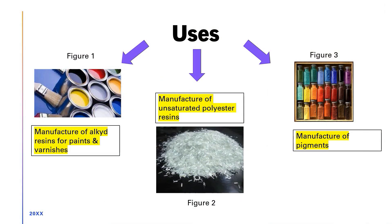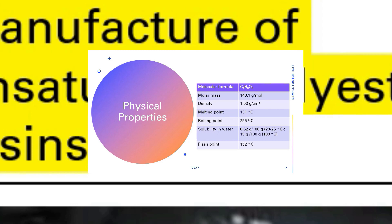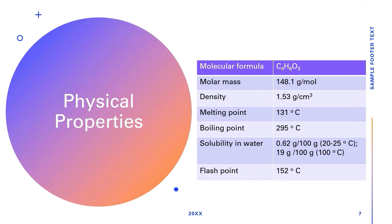Industrial applications. The uses of phthalic anhydride include the manufacture of alkyd resins for paints and varnishes, unsaturated polyester resins and pigments. The physical properties of phthalic anhydride is as shown in the table.